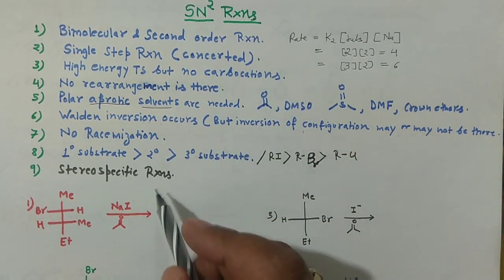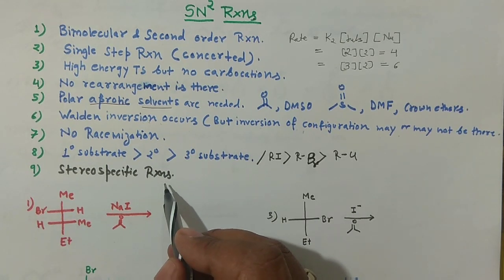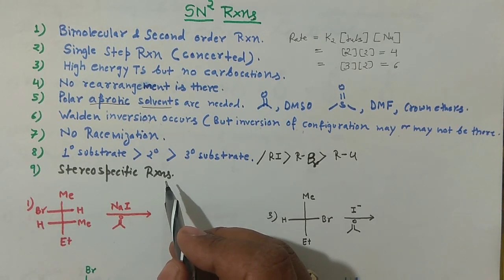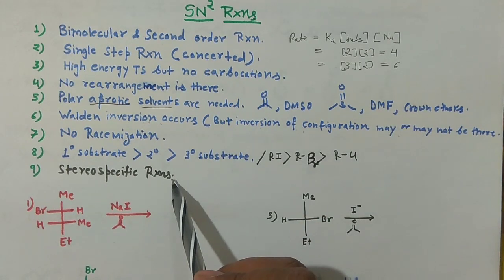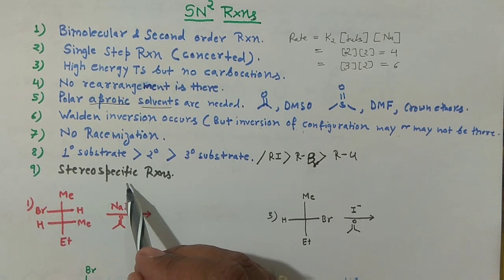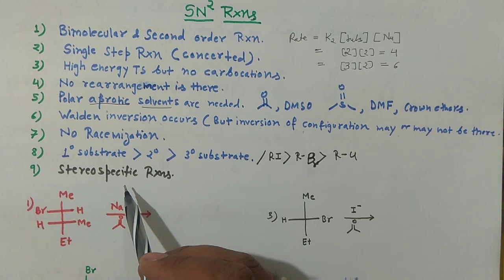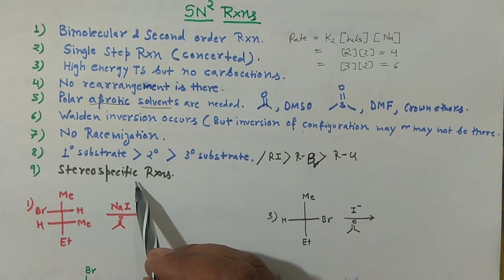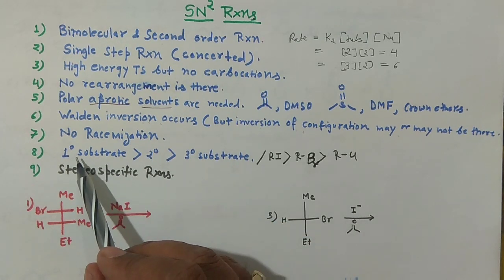SN2 reactions are stereospecific reactions. Stereospecific means if you do your reaction with a starting material having a particular stereochemistry, your product will also have a particular stereochemistry. If you change the stereochemistry of the substrate, the stereochemistry of the product will also change.